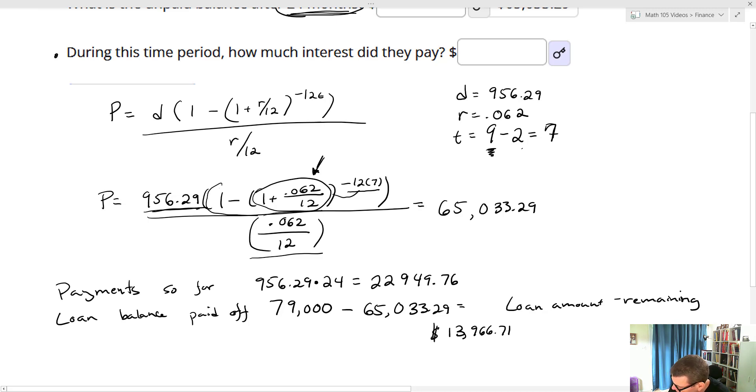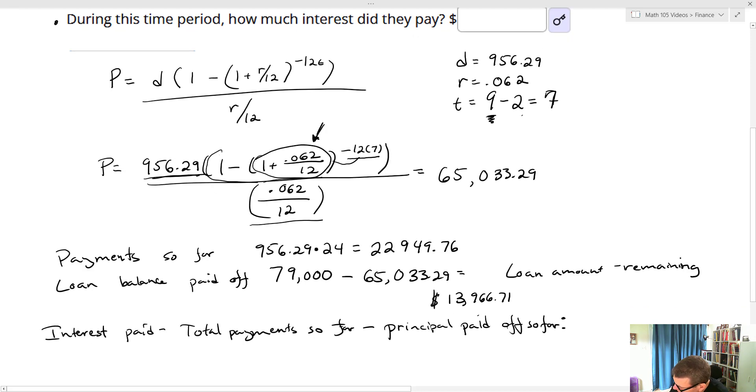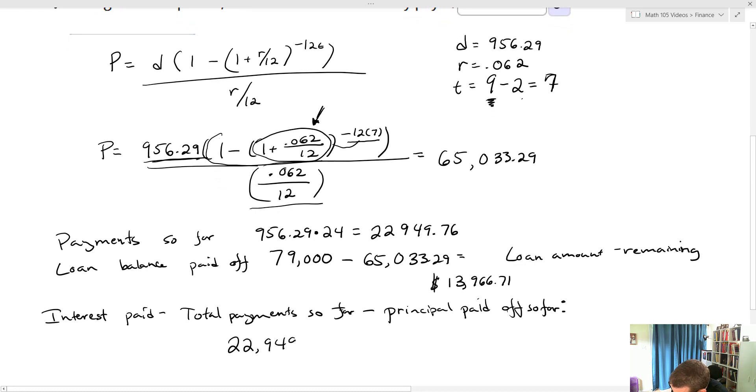So now our interest paid is going to be, it's going to be the total payments so far minus the principal paid off so far. And so what that means is, we're going to end up getting $22,949.76, that's the total payments minus the amount of principal, $13,966.71. And that'll give me $8,983.05. And that's the amount of interest that we paid so far.